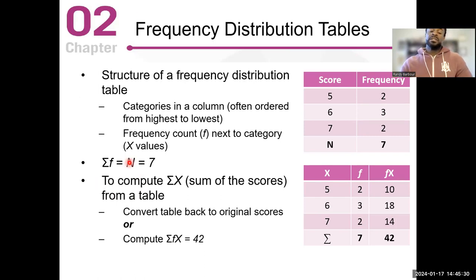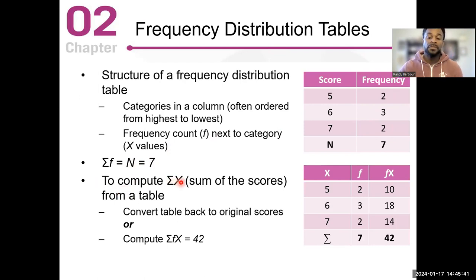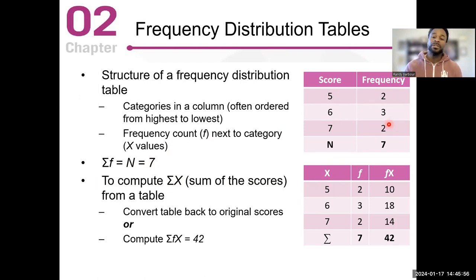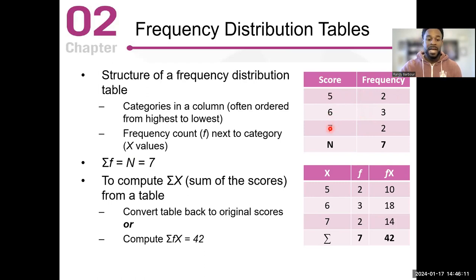To compute the sum of the scores, I'm not just going to sum five, six, and seven, because that's not the summation of the scores. I have seven individuals in this particular population and each of them has a score. So in order to sum the scores, I have to identify the individual scores for each person and sum those — not just add the five and six, which is 11. That's incorrect. When you sum the scores for the table, you have to determine what the total number of scores is for each individual category and then sum.